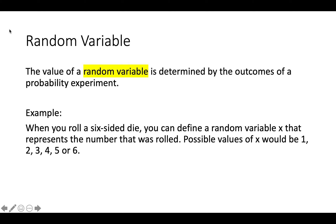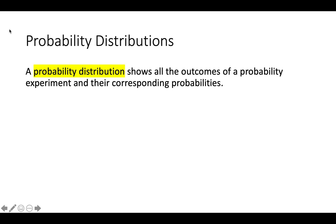We're eventually going to talk about a binomial distribution, but there's a more general thing called a probability distribution. A probability distribution shows all the outcomes of a probability experiment and their corresponding probabilities — it shows you the outcomes and their probability.